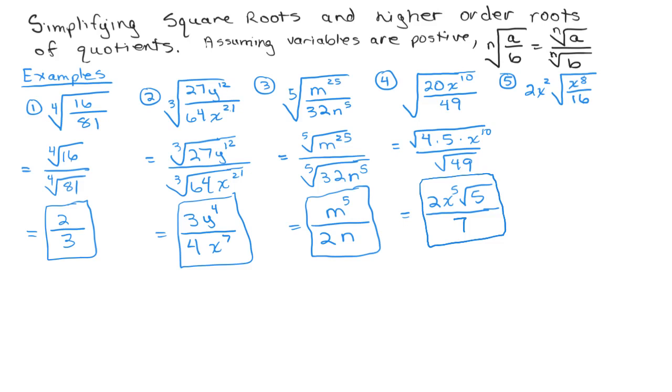OK, the last one. Now notice I have 2x squared times the square root of a quotient. So that 2x squared is really in the numerator. So I'm going to write it that way: 2x squared over 1. And I have to do the square root of x to the 8th over the square root of, I'm sorry, the square root of 16.